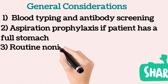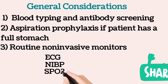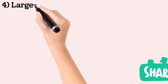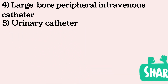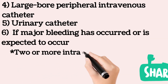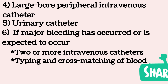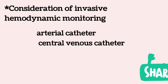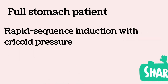Routine non-invasive monitors must be attached: ECG, non-invasive blood pressure monitor, pulse oximeter, and temperature probe. Large-bore peripheral intravenous catheter and urinary catheterization must be performed. If major bleeding has occurred or is expected, two intravenous catheters must be used and blood should be arranged in advance. Consideration of invasive hemodynamic monitoring such as arterial catheter and central venous catheter may be required. For general anesthesia, rapid sequence induction with cricoid pressure should be used if the patient has a full stomach.